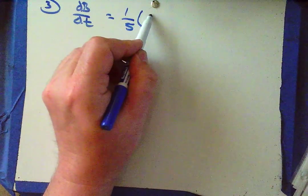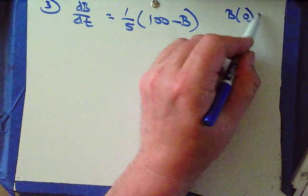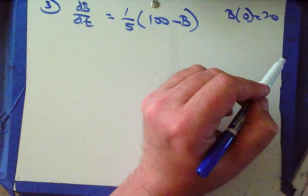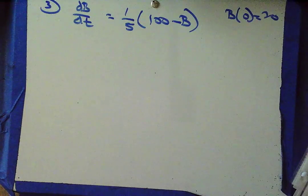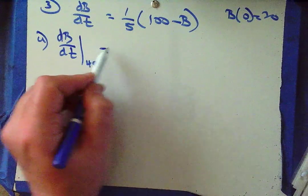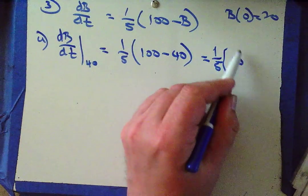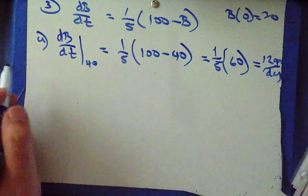Let's take a look at problem number 3. A baby bird gains weight. dB/dt equals 1/5 times (100 minus B). Part a: B is the solution to the differential equation where B(0) equals 20. Is the bird gaining weight faster when it weighs 40 grams or when it weighs 70 grams? So dB/dt evaluated at B equals 40 is 1/5 times (100 minus 40), which is 1/5 times 60, or 12 grams per day.